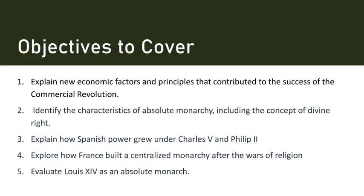Finally, we will evaluate Louis XIV as an absolute monarch. Louis XIV, also known as the Sun King, is often considered the epitome of absolute monarchy in France. His reign, which lasted for over seven decades, was characterized by a centralized government, the Palace of Versailles, and the belief in his divine right to rule. His policies focused on expanding the French state and maintaining control over the nobility.